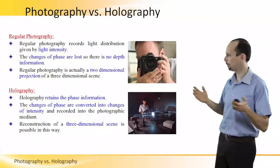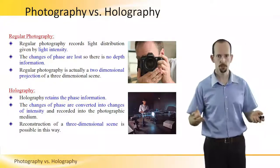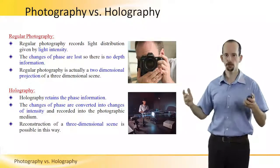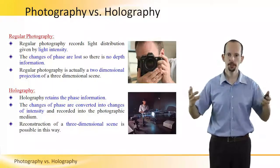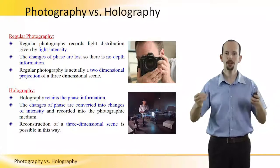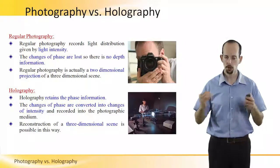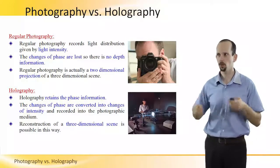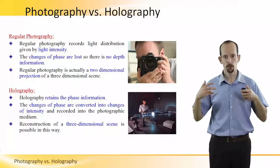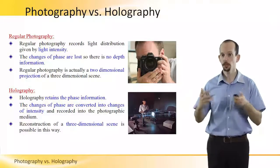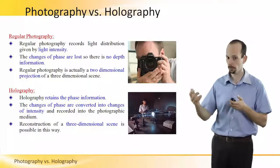Here's a simple comparison between regular photography and holography. In regular photography, what we do is actually record the light distribution given by light intensity, and the phase information is lost. Because the phase information is lost, we cannot retain the depth information. And so, regular photography is actually a two-dimensional projection of a 3D scene.